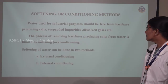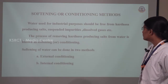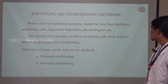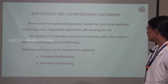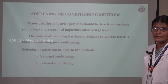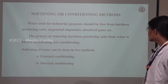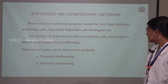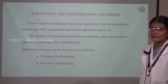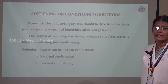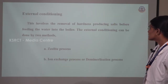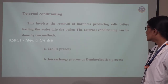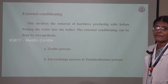In external treatment we are going to use softening or conditioning methods. Water is mainly used for industrial purposes and should be free from hardness producing salts, suspended impurities, dissolved gases, etc. The process of removing hardness producing salts from water is known as softening or conditioning. Softening can be done by two methods: external conditioning and internal conditioning. External conditioning involves the removal of hardness producing salts before the water is fed into the boiler.